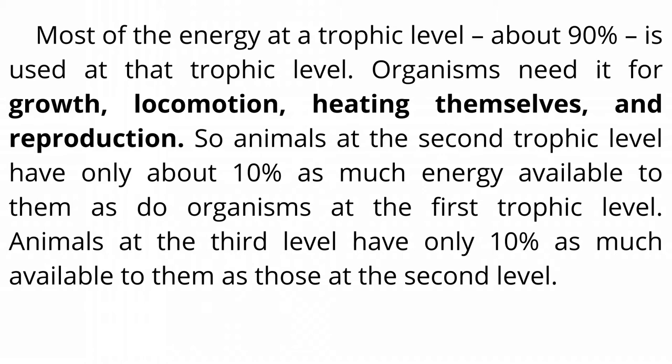Organisms need energy for growth, locomotion, heating themselves, and reproduction. So animals at the second trophic level have only about 10% as much energy available to them as do organisms at the first trophic level. Animals at the third level have only 10% as much available to them as those at the second level.